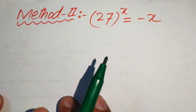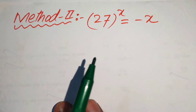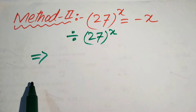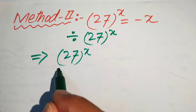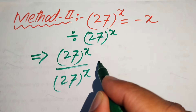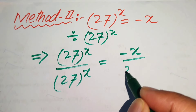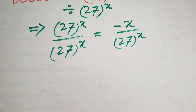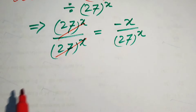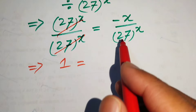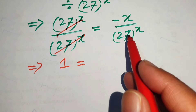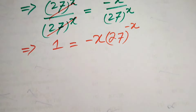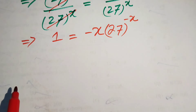Now we discuss the question again using method 2. In the first step of method 2, we divide both sides by 27 to the power of x. This gives 1 equals minus x divided by 27 to the power of x, which we rewrite as 1 equals minus x times 27 to the power of minus x.